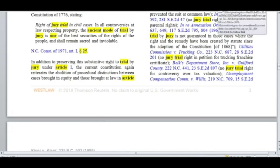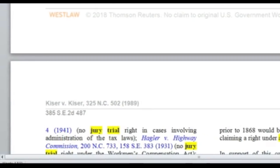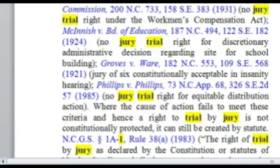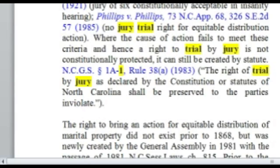Such actions have no jury trial right — cases involving parental rights, because back before 1868, every parent did not have to go to court; nobody went to court to exercise their parental rights. The right to trial by jury is not guaranteed where the right and the remedy have been created by statute since the adoption of the Constitution. No jury right for controversy over tax valuation, no right under workman's comp, no right for administrative decisions regarding school sites, and no jury trial right for equitable distribution action because a marriage would have been handled differently before 1868.